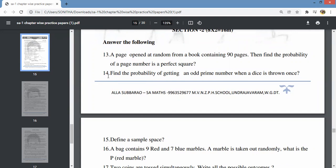A book has 90 pages. Find the probability that a page number is a perfect square. The perfect squares are 1, 4, 9, 16, 25, 36, 49, 64, 81. That's 9 numbers out of 90, which gives 1 by 10.